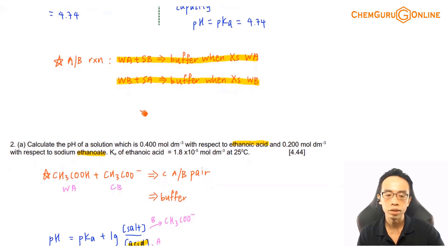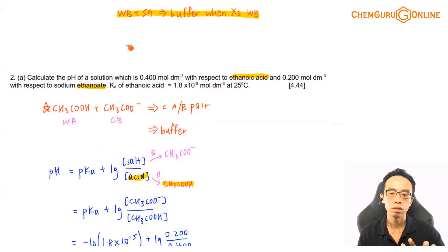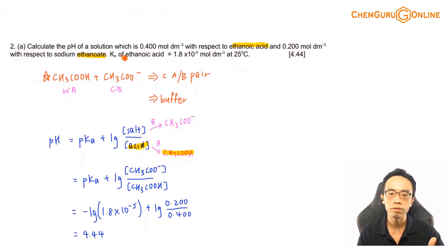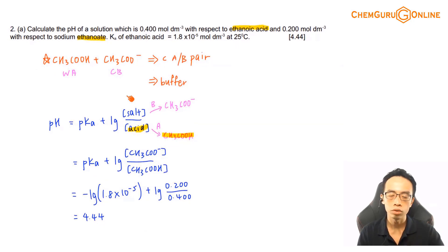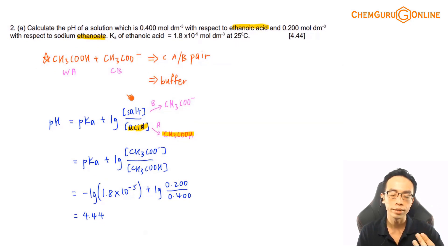If it is a buffer, I can determine the pH of this buffer solution. The Ka value is given, the concentration for your acid and the conjugate base is given. I think we should be able to determine this quite easily.